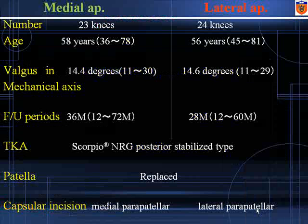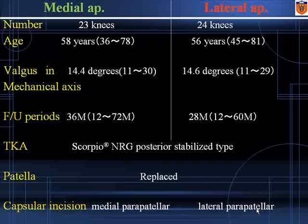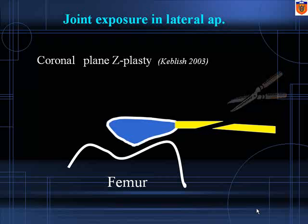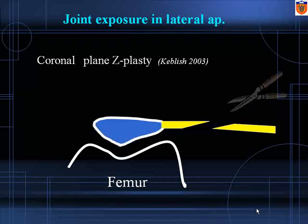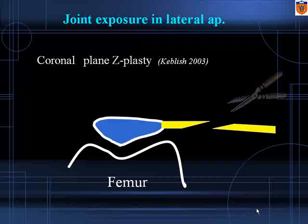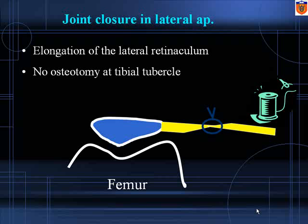Age, deformity, and follow-up period were comparable. Scorpio NRG PS was used, and patella was replaced in all knees and fixed with cement. We used medial parapatellar exposure for the medial approach. In the lateral approach, the quadriceps and lateral retinaculum were incised obliquely for coronal plane Z-plasty. At closure, we allowed sliding of the quadriceps and retinaculum, with no osteotomy of the tibial tubercle.